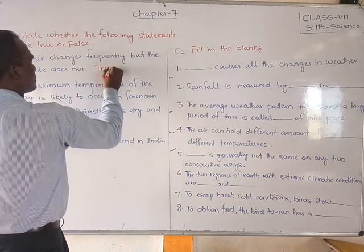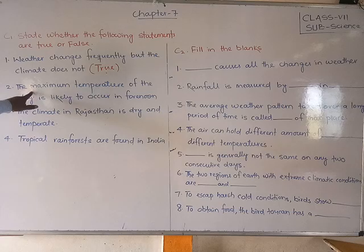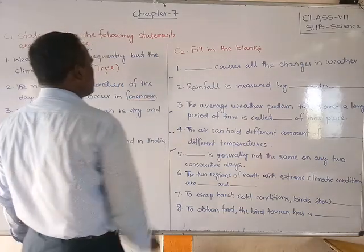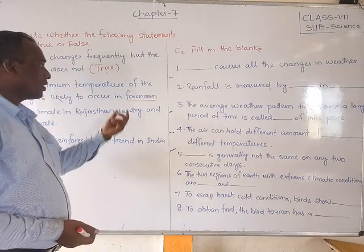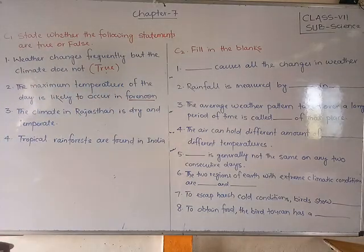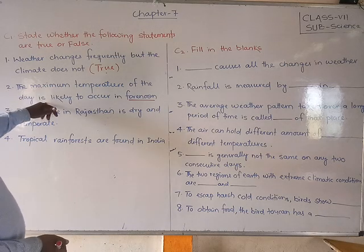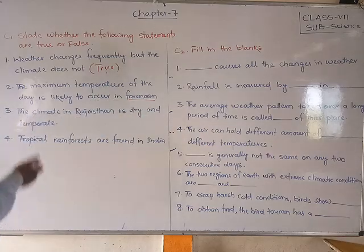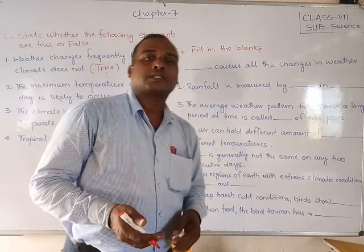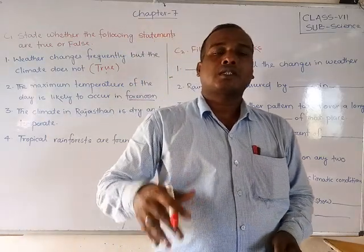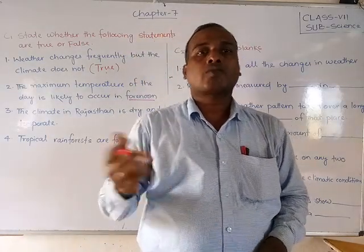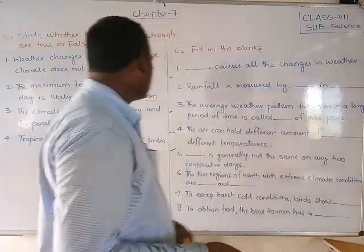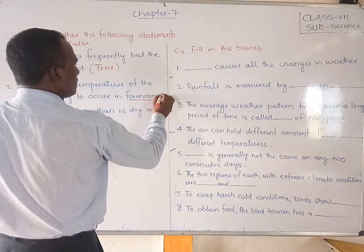Second statement: the maximum temperature of the day is likely to occur at noon. We cannot find maximum temperature at noon because that is around evening time — 3 o'clock or 4 o'clock is when we can observe the maximum temperature of the day. So this statement is false.